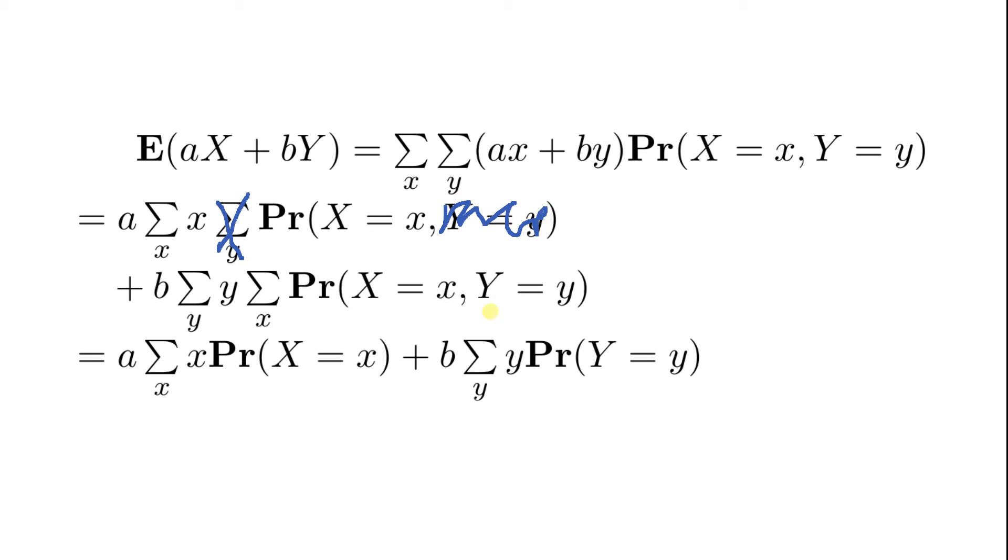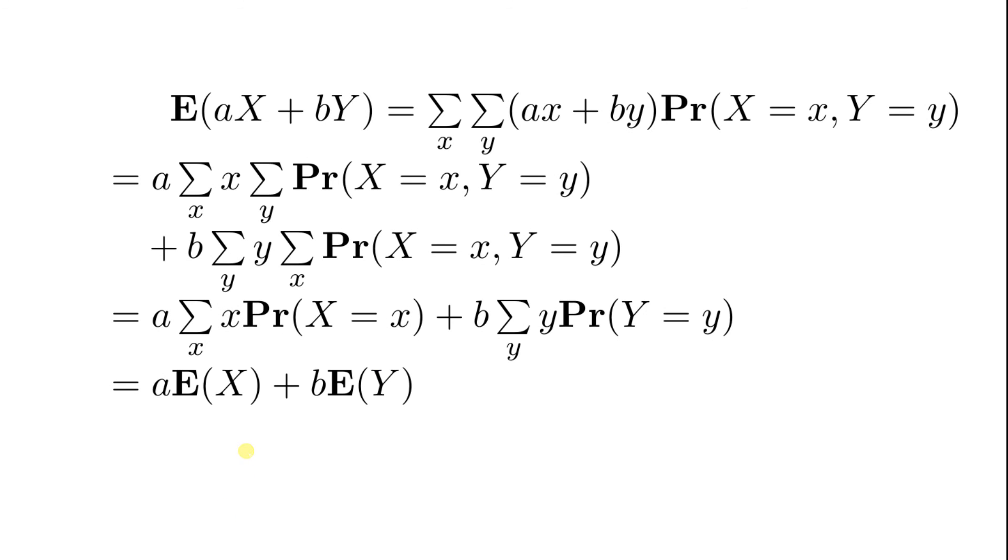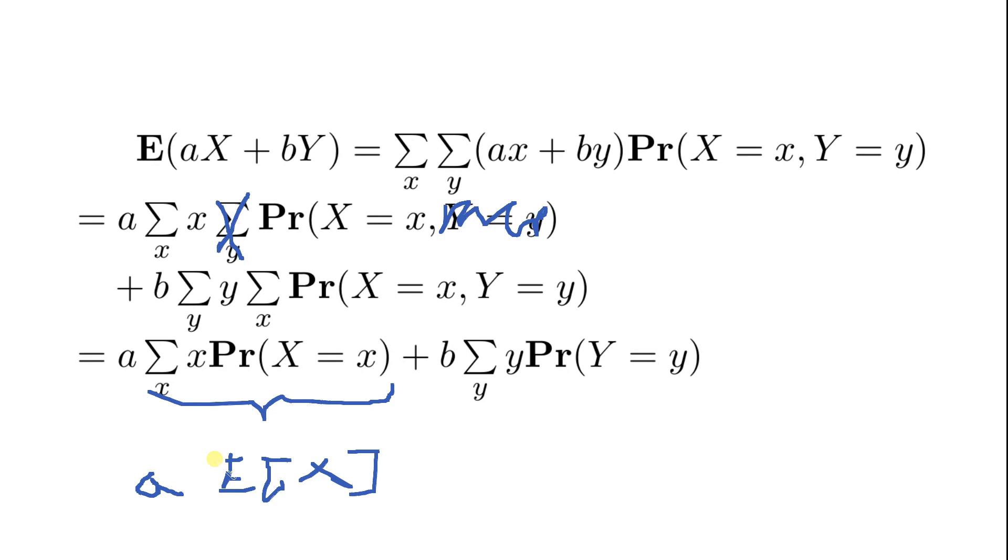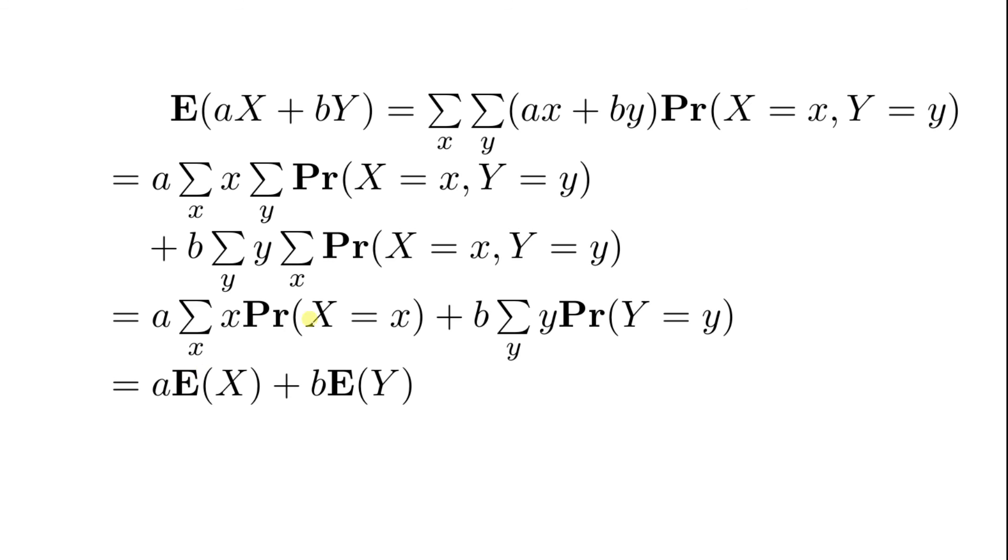We plug this in, and what we have now is that this sum here just vanishes, just as this Y here, and what we are left with is this sum, which is the expected value of X, and the a is just left alone here. This is exactly what we want for linearity, and it's the exact same thing with this product.